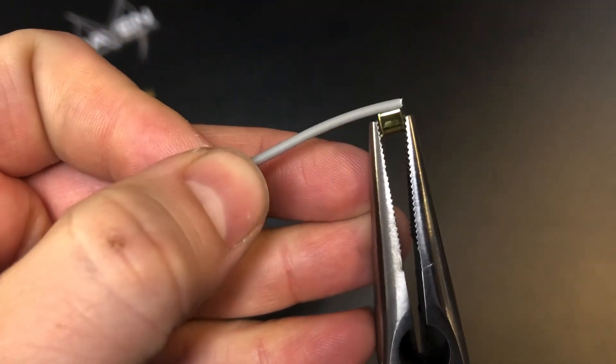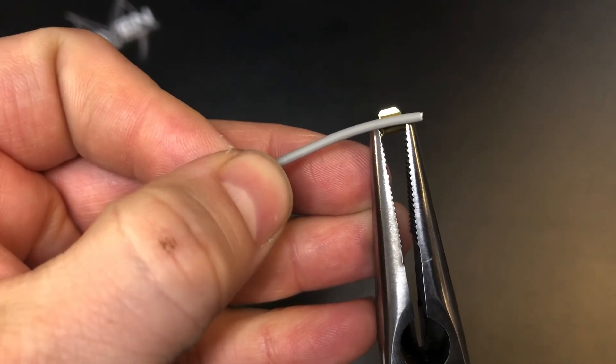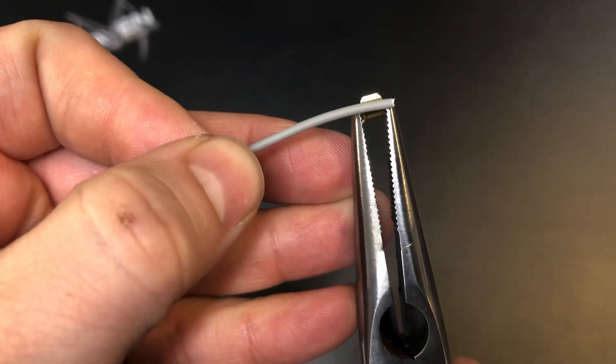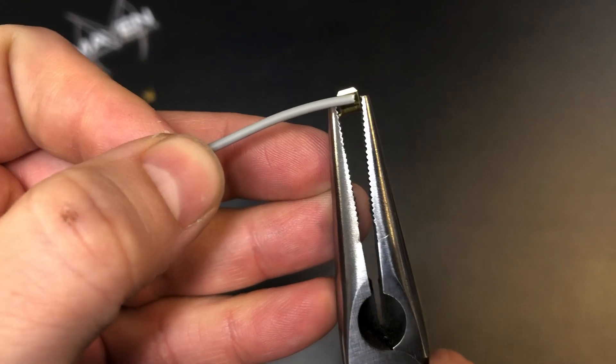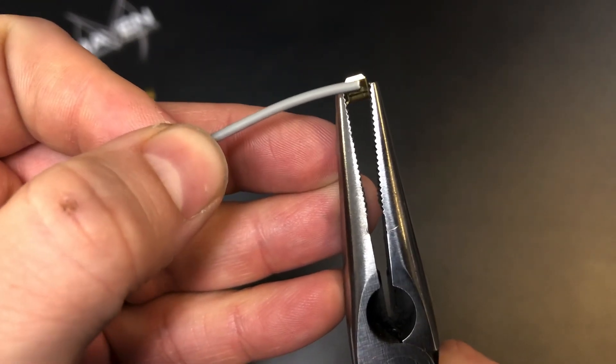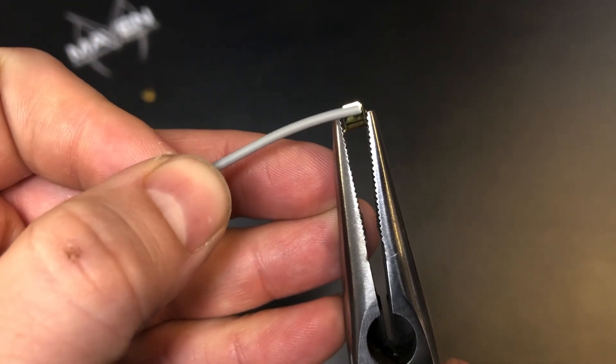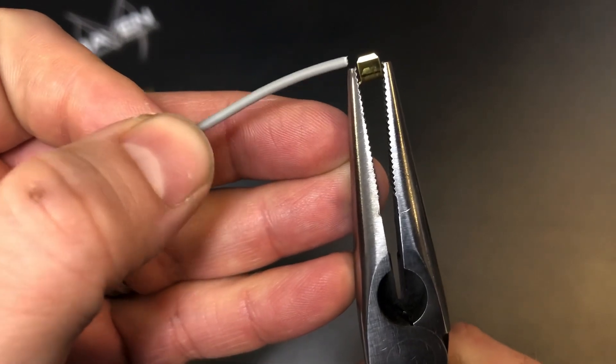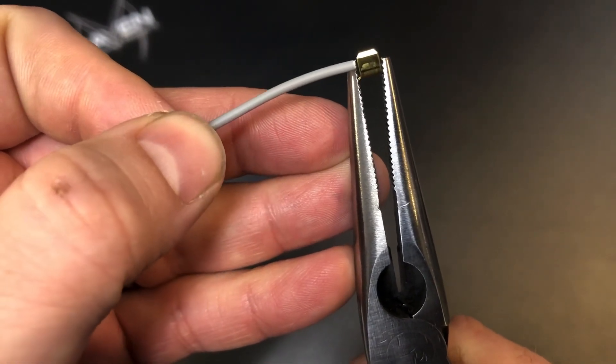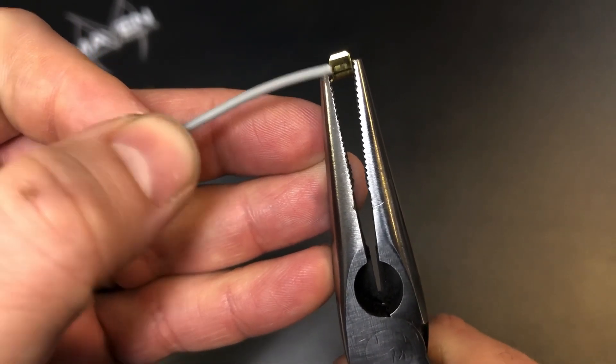In this case, just visually looking at it here, we want to strip a little bit more off. We want to make sure that when we do splice it, all the strands and the conductors inside the wire are showing on both sides of the splice.